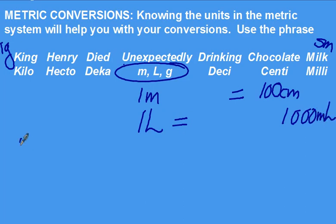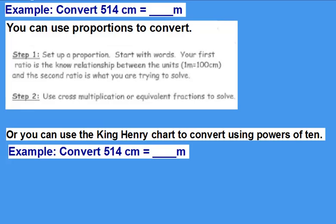Or 1 kilogram equals 1,000 grams. So you can multiply and divide by powers of 10 up and down the chart as long as you remember the chart. You can use proportions or you can use the King Henry chart to convert.